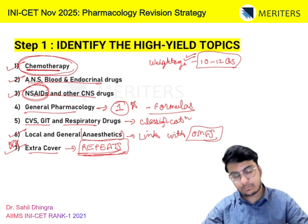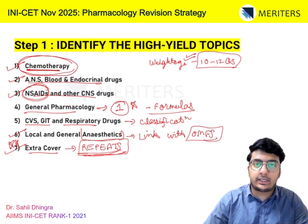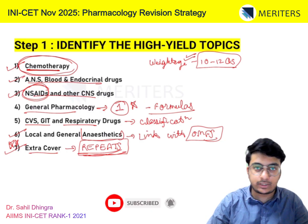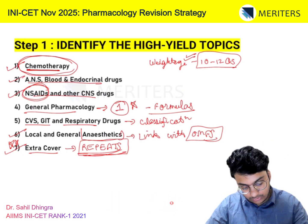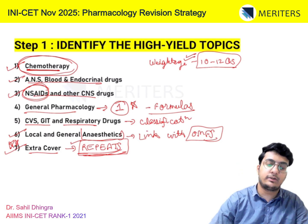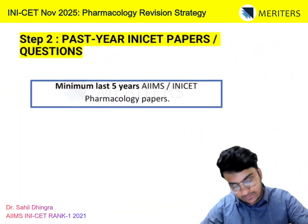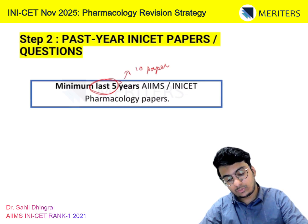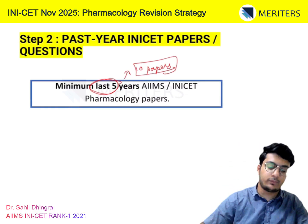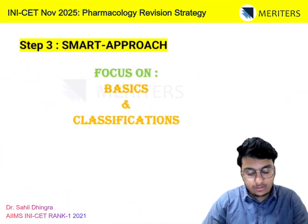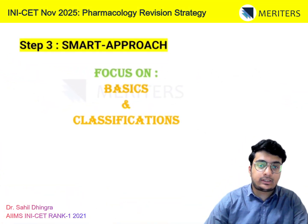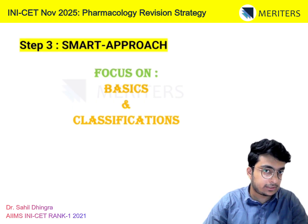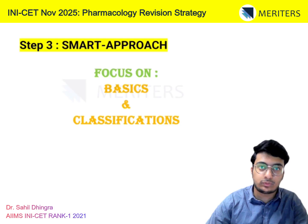The extra cover section is one of the most important in Pharmac because it includes all past repeats. Repeats are very important since Pharmac is a very lengthy and difficult subject that most students find hardest to cover. So the focus should be on repeats and extra cover. After this, you must do a minimum of the last 5 years' question papers — that is 10 papers from 2021 up to 2024.